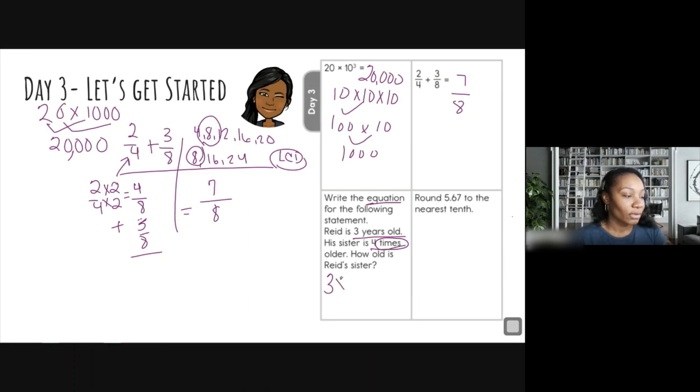His sister is four times older. So four times, so three times four. That's it. All right, so three times four, because now it says how old is Reed's sister. So because Reed's sister is four times Reed's age, which is three, we're just multiplying and that is 12.